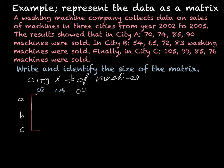Now we just need to fill in what we know. So the first year for city A was 70, then 74, then 85 and 90. City B: it was 54, then 65, then 72 and 83. And finally city C was 105, 99, 85, and 76.